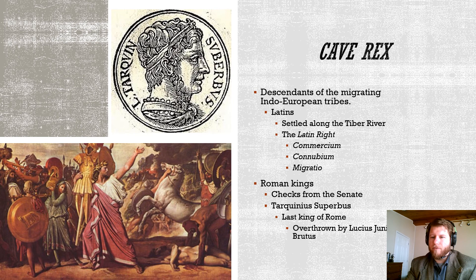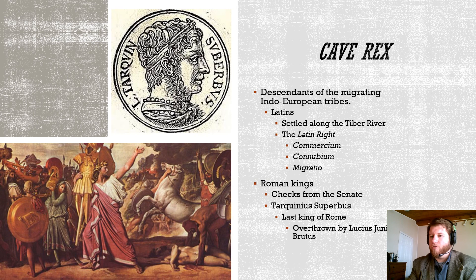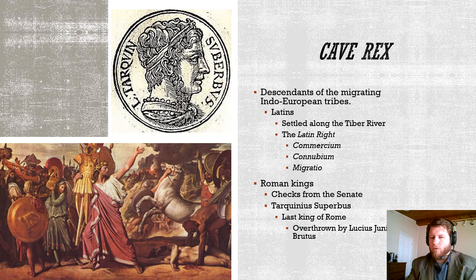The Latin phrase cawe rex, or 'beware of kings,' tells us a lot about early Roman history. Those Indo-European tribes — the Latins who settled along the Tiber River — brought with them a body of early laws that applied to all people, known as the Latin Rite. These were the right of Commercium, the right to trade; Connubium, the right to marriage; and Migratio, the right to migrate or move. These three fundamental laws were enjoyed by the early Latin people of Latium.